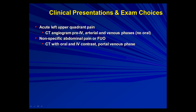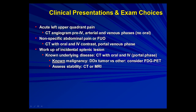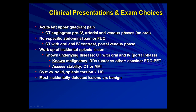For nonspecific pain or FUO — fever of unknown origin — you should just be doing a routine CT with oral and IV in the portal venous phase. If somebody has an incidental splenic lesion detected, if they have a known underlying disease, CT in the portal venous phase would usually be sufficient. If they have a known malignancy, you could consider FDG PET or assessing stability with CT or MR. Ultrasound is very good when the question is solid versus cystic, or for unusual cases like splenic torsion. Most incidental lesions are benign, and spleen size alone can easily be judged on ultrasound.